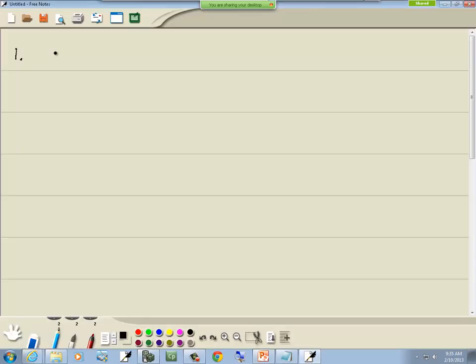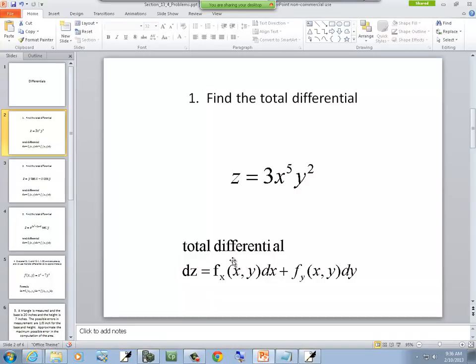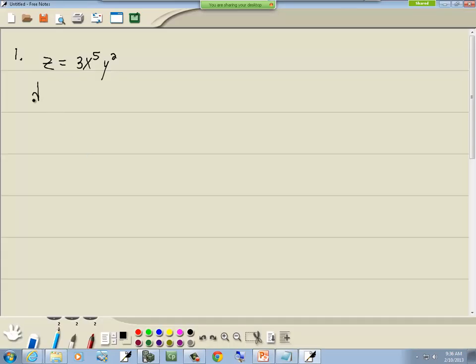This one says find the total differential. z equals 3x to the 5th y squared. Our formula for a total differential is dz equals partial with respect to x times dx plus partial with respect to y times dy. So write down that formula.